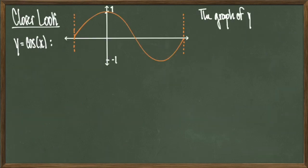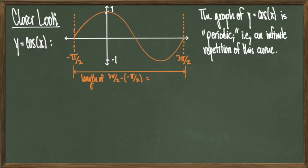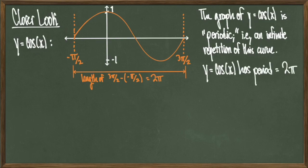I'm going to zoom in on a particular slice of the cosine function. The word periodic essentially means I have an infinite repetition of the same shape. When looking at periodic functions, a way to classify them is to pay attention to the shape being repeated and look at how much of the x-axis is covered by that shape. The line I've drawn goes from negative pi over 2 to 3 pi over 2, a length of 2 pi. Therefore y equals cosine x has period equal to 2 pi.